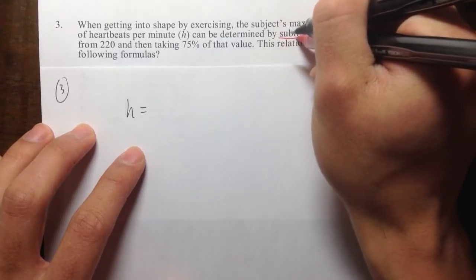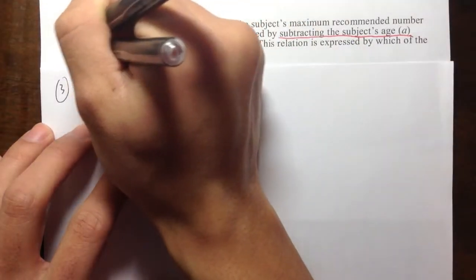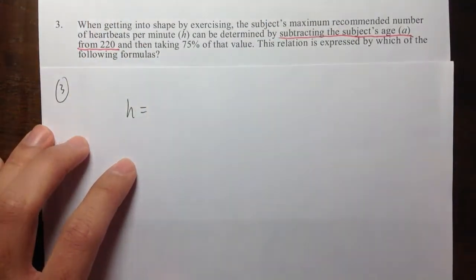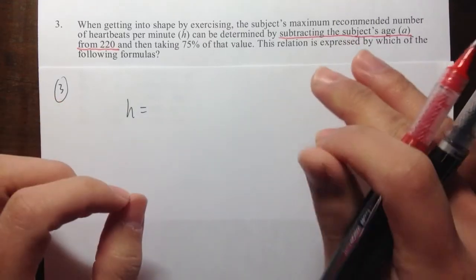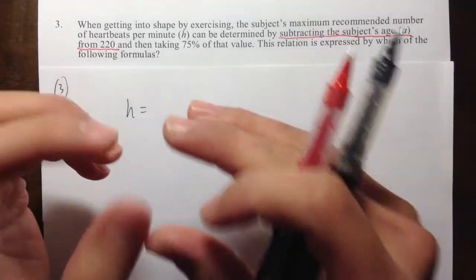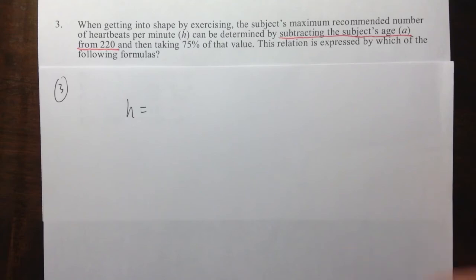Take a look at this. It says subtract the subject's age, which is A, from 220. So what does that mean? Think about if you are, let's say, 30 years old. What you need to do first is, you want to take 220, and then minus 30 years old. Minus 30.